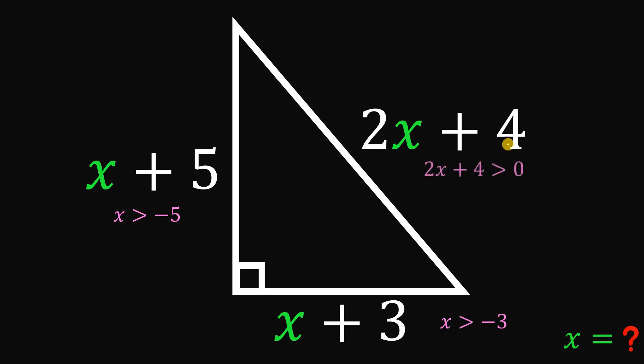And this 2x plus 4 must also be greater than 0. So it follows that x must be greater than negative 2. Now, if we get the intersection of those ranges of x, we can say that x must be greater than negative 2. So this will help us to identify the correct value of x.